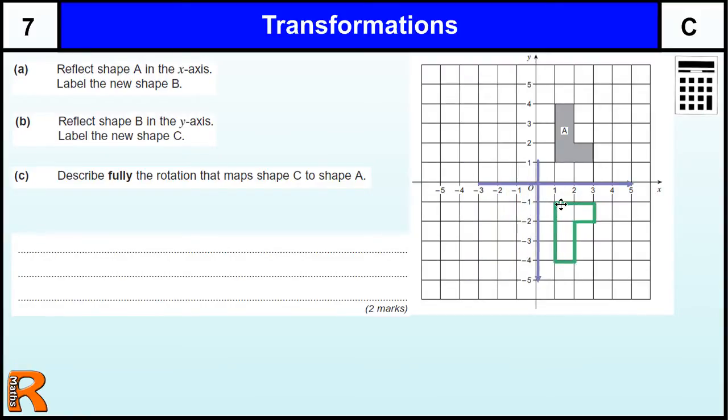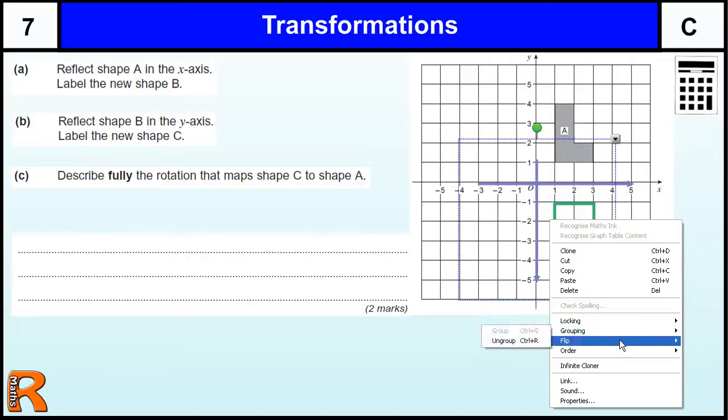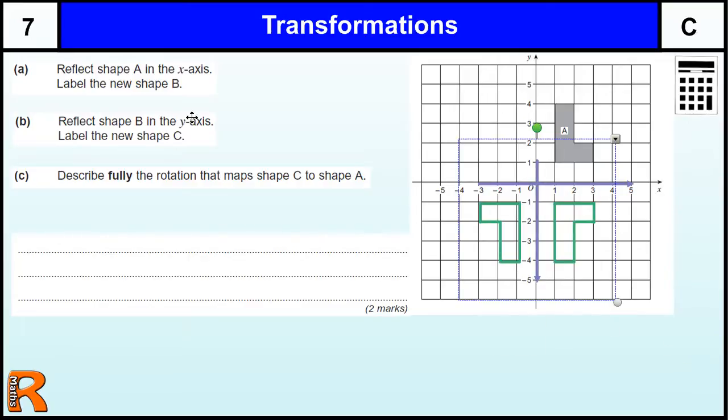Next we're going to reflect it in the y-axis, so get your tracing paper and draw your line on the y-axis. And this time, I'm going to flip it horizontally, left-right, and that gives us that position.